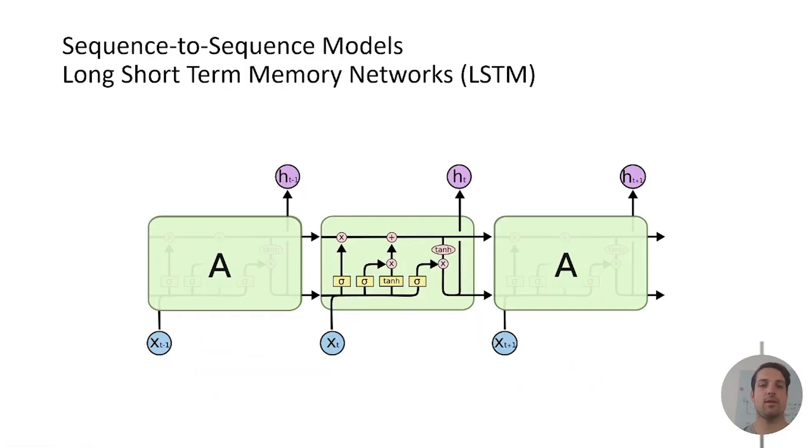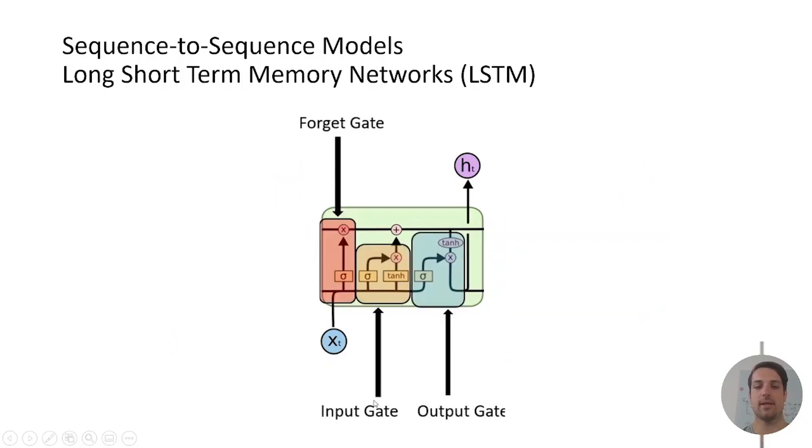For solving that problem long short term memory networks or LSTMs were invented where you have a similar structure like in the recurrent units but with more complex mathematical operations. For example there's a forget gate, an input gate, and an output gate. Every gate fulfills different tasks and the information is transferred better over longer distances.